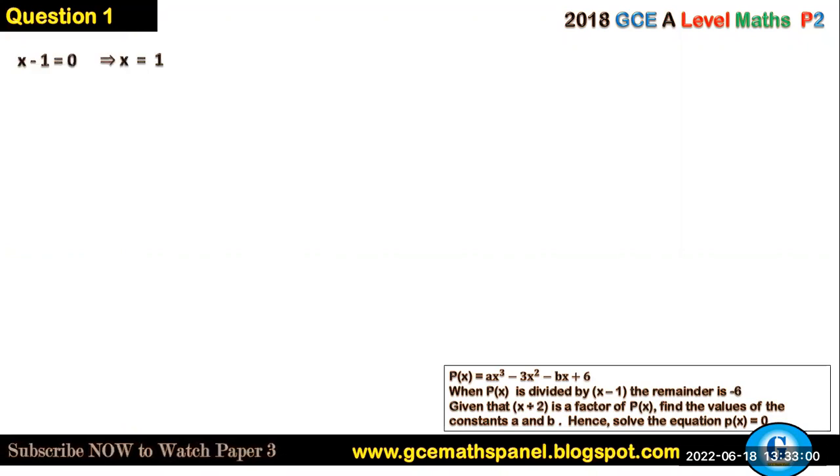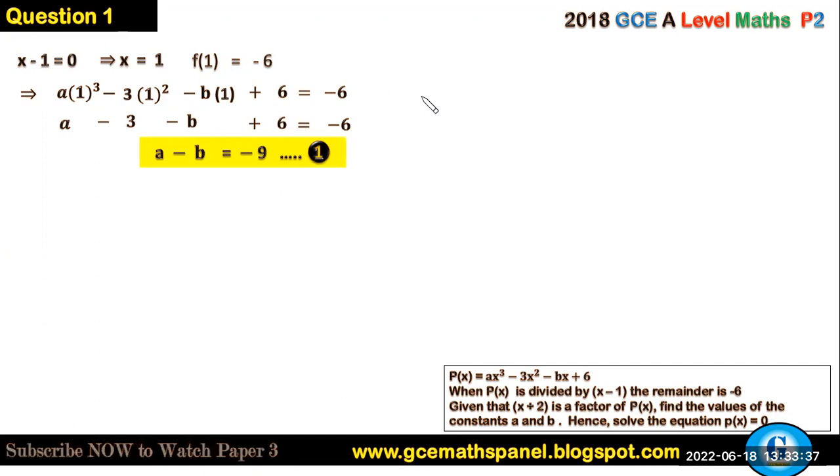So first of all, x minus 1 equals 0 implies x is equal to 1, and it leaves a remainder of negative 6, which means f(1) should be equal to negative 6. So substituting 1 into this polynomial function will give us a(1)³ - 3(1)² - b(1) + 6 = -6. Simplifying this will give us a - 3 - b + 6 = -6, and we can form an equation from this: a - b = -9. Let's call this equation 1.